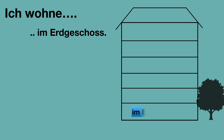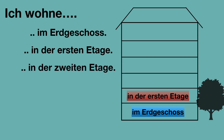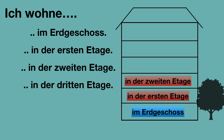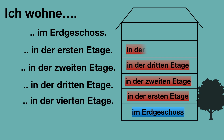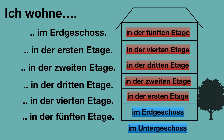On the ground floor: Ich wohne im Erdgeschoss. Now let's use the word Etage — in that case the answer would be: Ich wohne in der ersten Etage, in der zweiten Etage, in der dritten Etage, in der vierten Etage, in der fünften Etage. And to say in the basement: im Untergeschoss. Very few of us live im Untergeschoss, right?